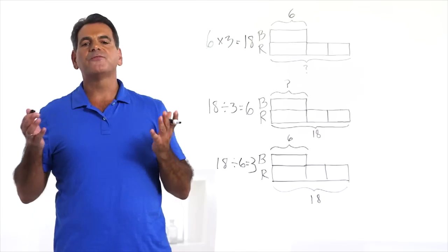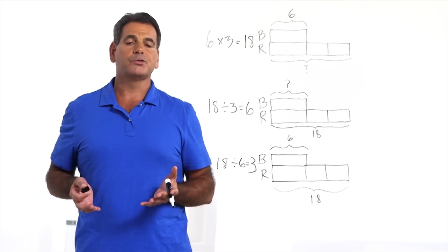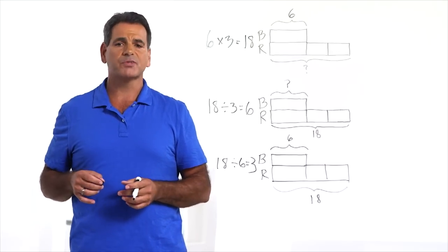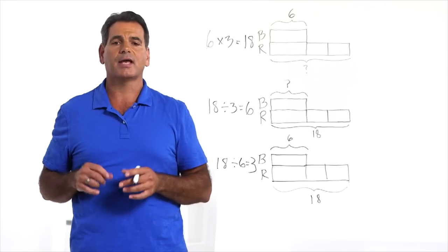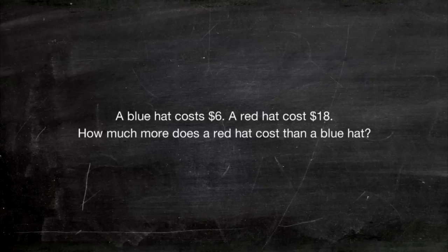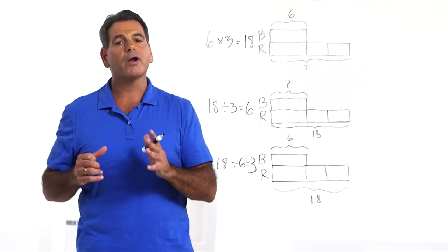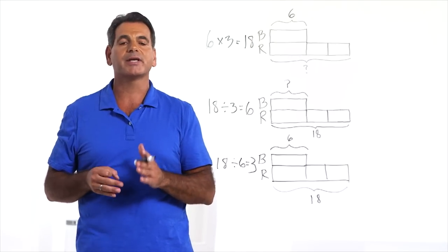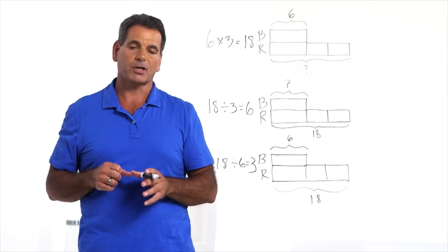Using bar models makes it very clear what operation we have to use to solve a problem. Relying on keywords and multi-step problem-solving strategies are not nearly as reliable. If these were additive comparison problems, the question would be a blue hat costs $6, a red hat costs $18, how much more does a red hat cost than a blue hat? So for additive comparison, we are asking how much more. And for multiplicative comparison, we are asking how many times as much.